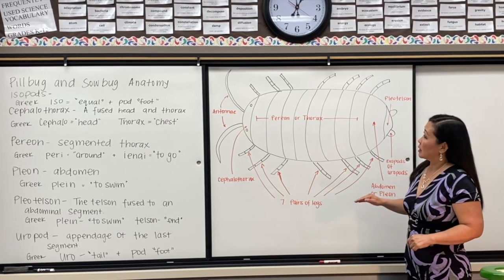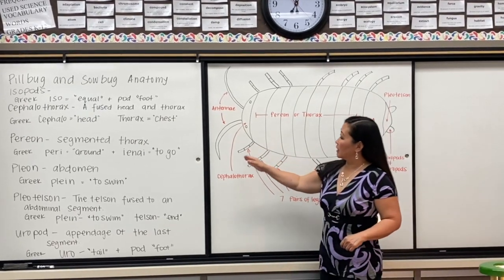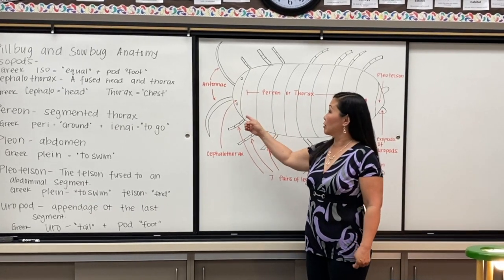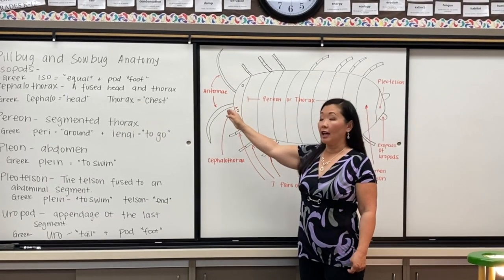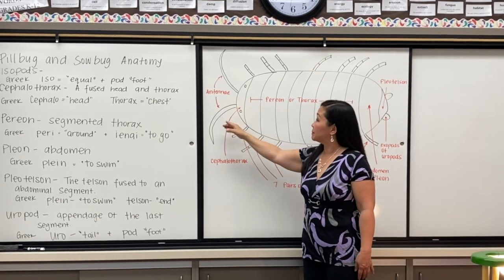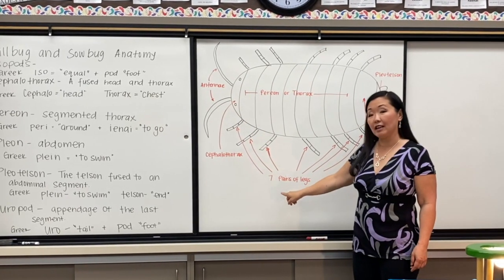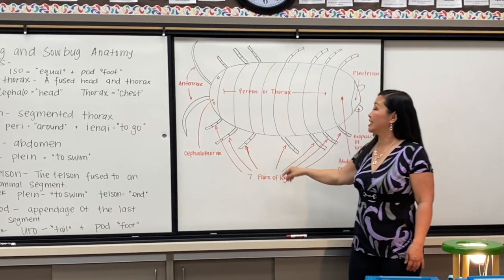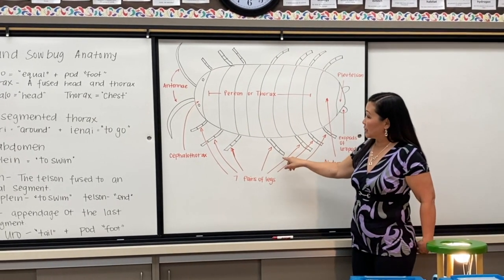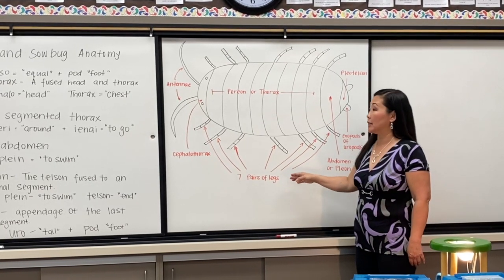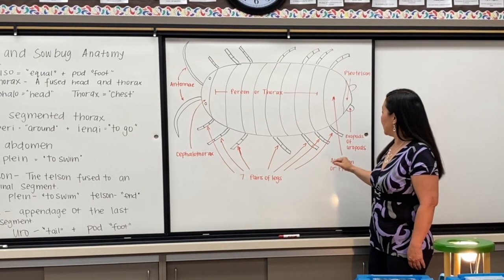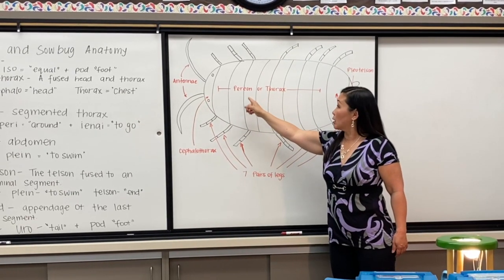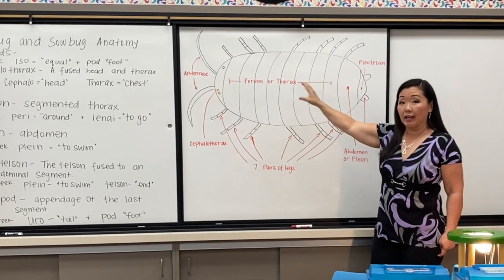First we're going to start at the head. They have a cephalothorax, which means that their head is fused to their thorax. They have two antennae, one and two. They have seven pairs of legs, seven legs on each side, and they're jointed legs. That's why they're called arthropods.